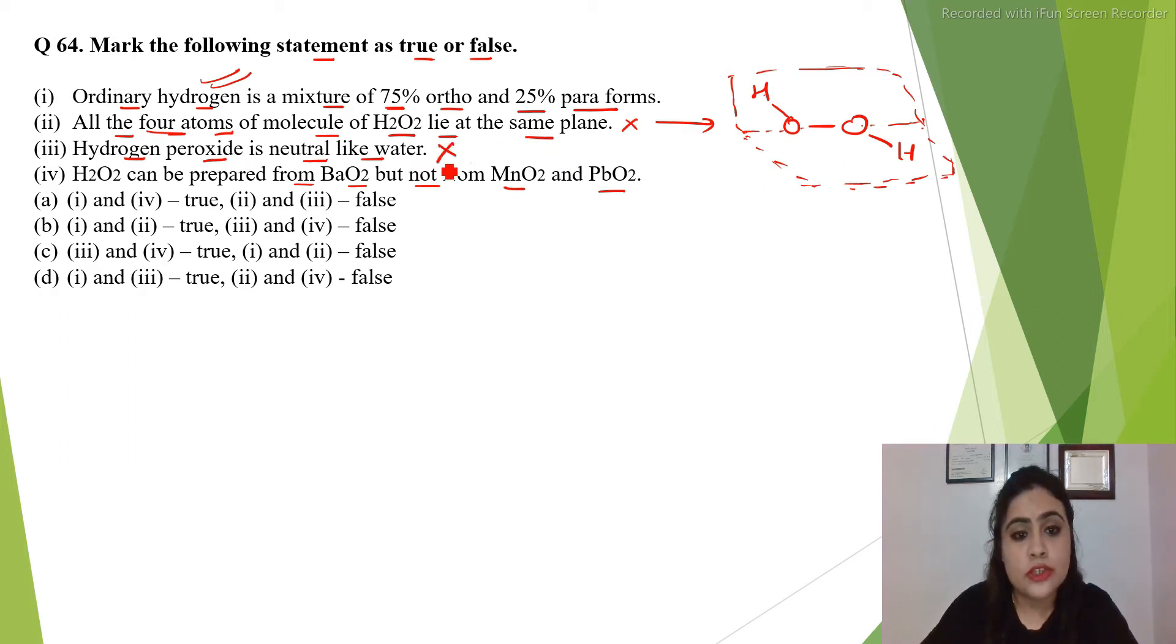Hydrogen peroxide is neutral like water. This also is false because when hydrogen peroxide reacts with sodium carbonate which is a base, it gives out salt and water. It will give out carbon dioxide, a gas because it's a carbonate. Whenever an acid and a base react, it gives a salt, water and carbon dioxide.